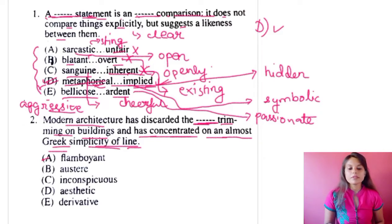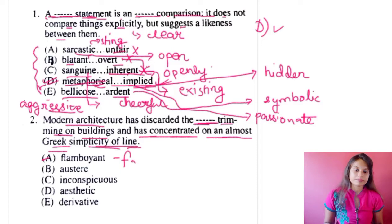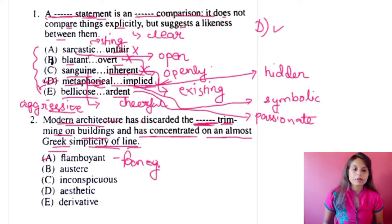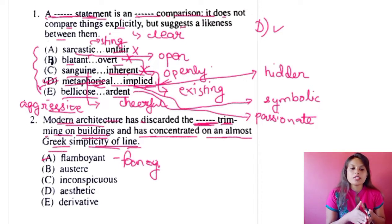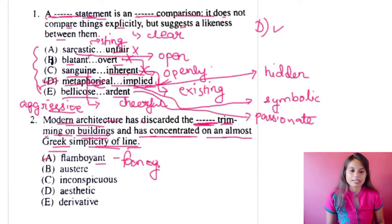The first option is 'flamboyant,' which means elaborate or fancy. If I put 'modern architecture has discarded the flamboyant trimming on buildings' — yes, it can go, because flamboyant means fancy and elaborate, exactly the kind of old fancy trimmings that were cut off from buildings to make them look more appropriate. So flamboyant could work, but let's check the other options.